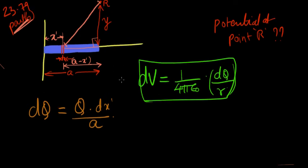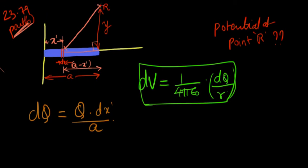If the point R is here, the distance of point R from our slice of the rod is essentially given by the hypotenuse that's formed by this distance, the distance y, and the remainder of the distance, A minus x prime, right? Take some time to understand this before we proceed.